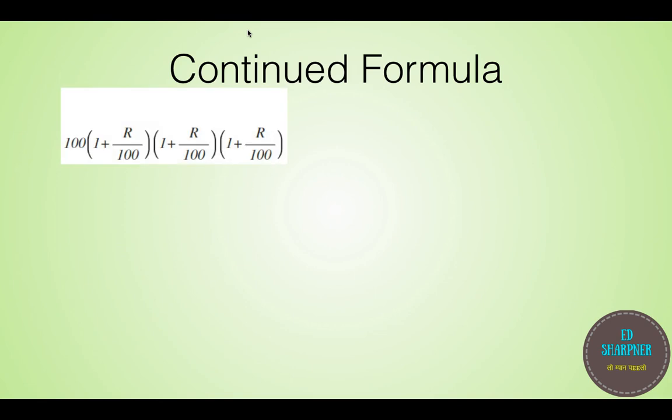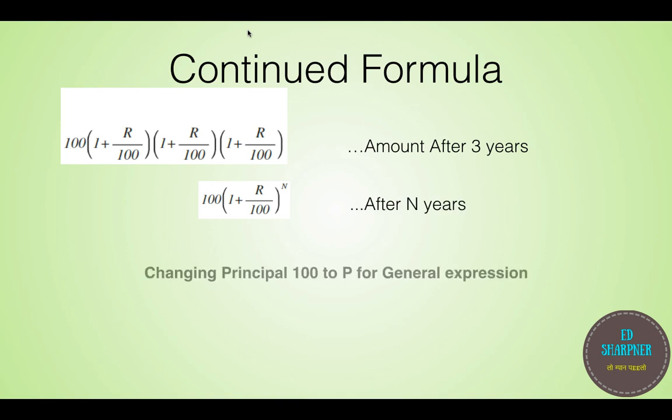As we continue, we can see after 3 years, this same amount becomes 100 into 1 plus R by 100 raised to 3, and for the N years, the formula would be 100 into 1 plus R by 100 raised to N. Let us just replace the initial principle amount 100 by P. Now replacing 100 by P, we get P into 1 plus R by 100 raised to N, which gives the amount accumulated if P is compounded for the period of N years with the rate of interest of R percent per year.